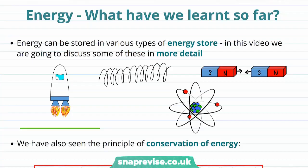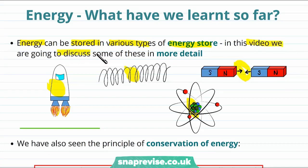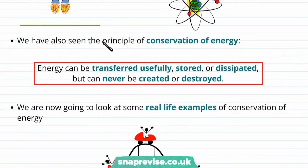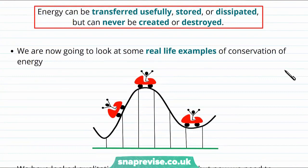So what have we learned so far about energy? One of the things we learned is that energy can be stored in various types of energy store. For example, energy might be stored in the gravitational potential store, or the elastic potential store, or the nuclear energy store, or the magnetic energy store. We also need to remember the principle of conservation of energy: energy can be transferred usefully, stored or dissipated, but energy can never be created or destroyed.